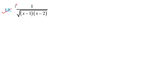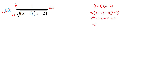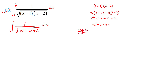For question 13, we have 1/√[(x-1)(x-2)] dx. The denominator is (x-1)(x-2), so we first simplify it. Multiplying out: x(x-2) - 1(x-2) = x² - 2x - x + 2 = x² - 3x + 2. So the integral becomes ∫1/√(x² - 3x + 2) dx.